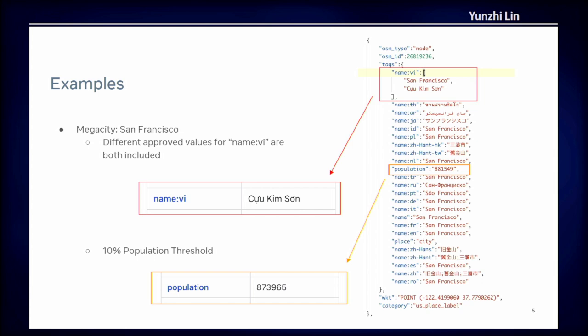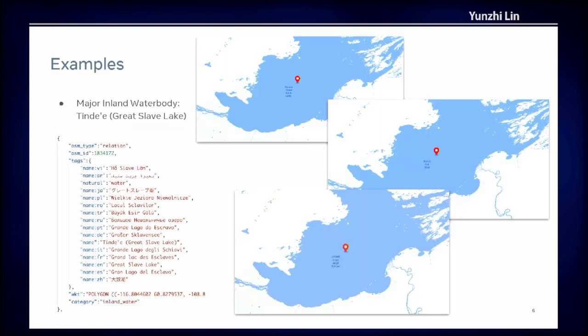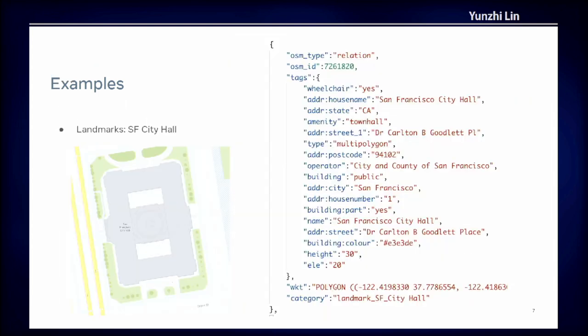Let's take a look at a couple of examples. The first one is the mega city. As mentioned, it's in JSON file format, so each feature is a JSON object. It has properties like OSM type, OSM IDs, tags with multiple names in different languages, geometry in WKT format, and a category to indicate what kind of map feature it is. Here's an example of an inland water body, and a sample US landmark — the San Francisco City Hall.